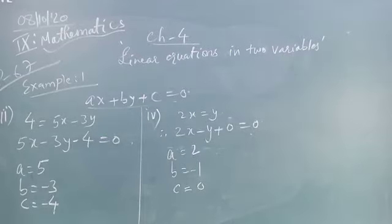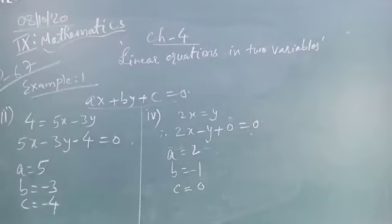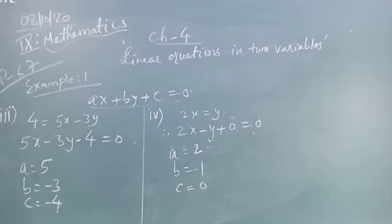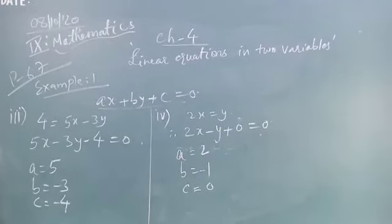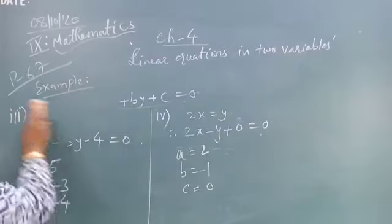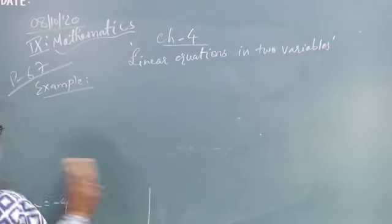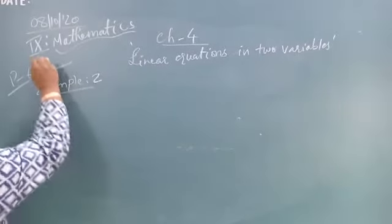So today you have to complete example 1 and their respective equations and values of A, B and C. Then see example number 2 in your book, on page number 68. Write each of the following as an equation having 2 variables.